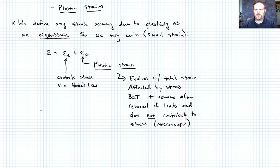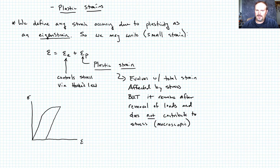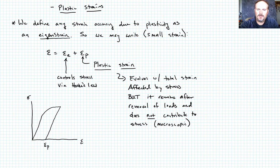It may be easier to see this with a graphic. On a stress-strain curve for a material with plasticity, we have an initial linear elastic load up, then yielding occurs and plastic deformation takes place. When we unload, the curve comes back down linearly, and upon reaching zero stress macroscopically, we're left with a residual plastic strain epsilon_P.